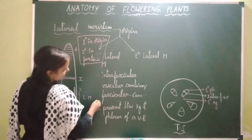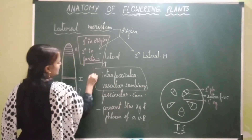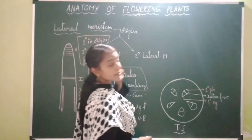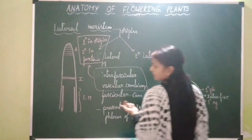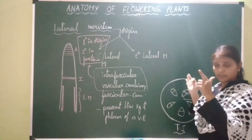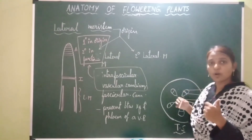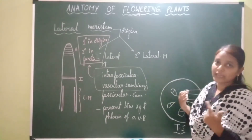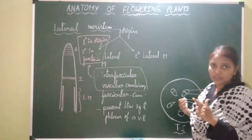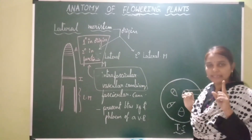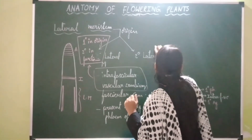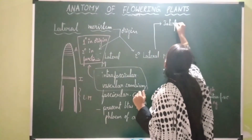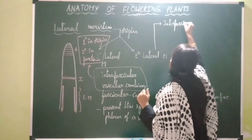Now let's study secondary lateral meristem. Lateral means it is present towards the lateral side; secondary means it is formed during the development of the plant, that is during secondary growth. Hence it is secondary in origin but lateral in position. An example of secondary lateral meristem is interfascicular vascular cambium, present in stems of dicots and gymnosperms.